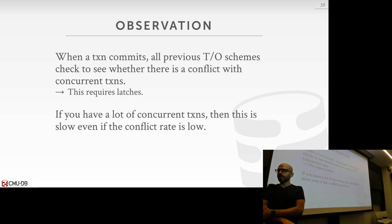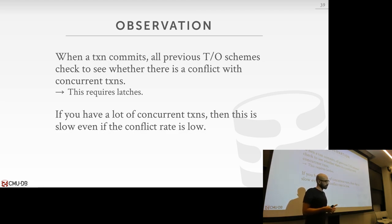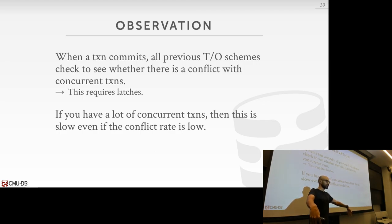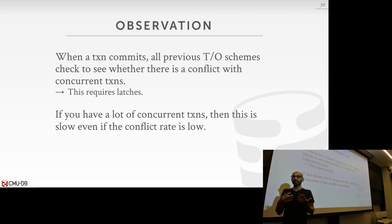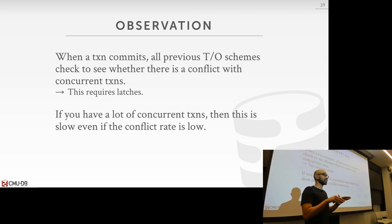When a transaction commits, even if transactions logically don't overlap, you still must maintain the physical integrity of the data structures. As part of validation, you look at the read and write sets of all other transactions. To access those sets consistently, you acquire latches. These other transactions are still running and could be modifying their local copies. This latch overhead can play a big role even for logically disjoint transactions.